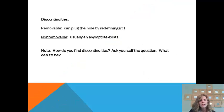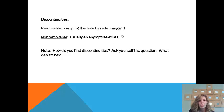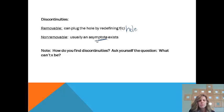What is a discontinuity? It's basically where there's a hole, jump, gap, or an asymptote. Now we're going to learn whether they are removable or non-removable. If a discontinuity is removable, you can basically plug the hole by redefining a certain point — there's a little fix, so the graph would be continuous again. If it's non-removable, that means we can't fix it; it's a way bigger fix, and usually there's going to be an asymptote.